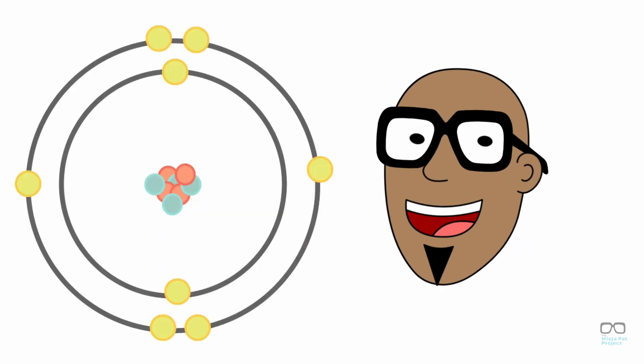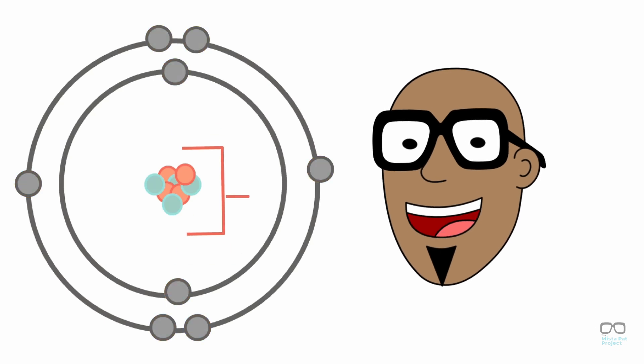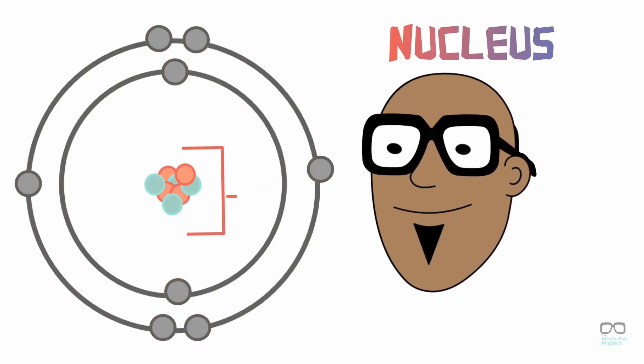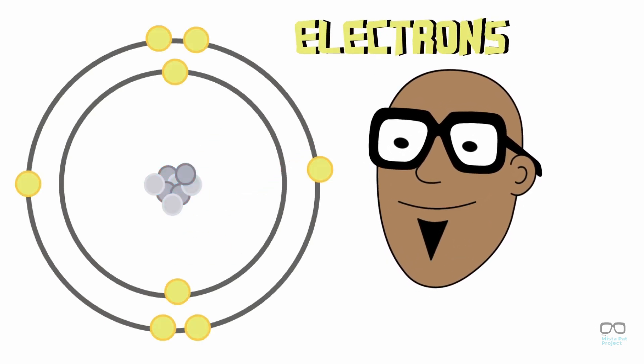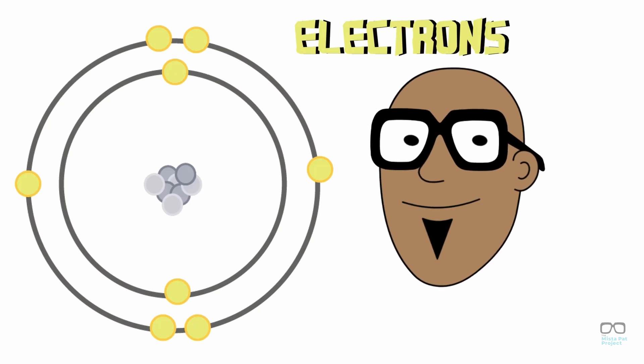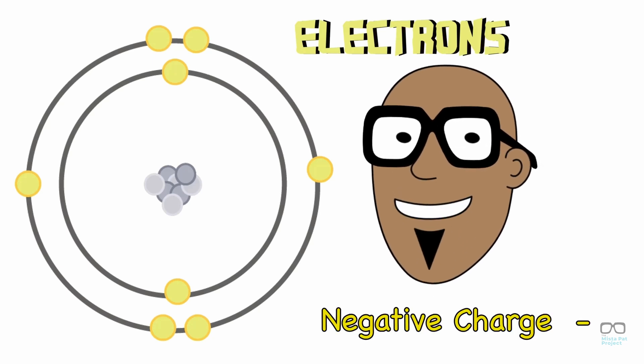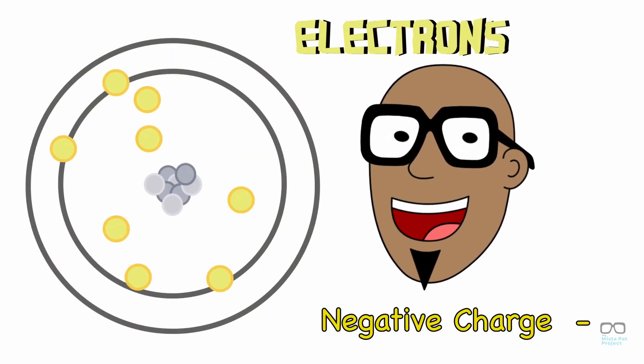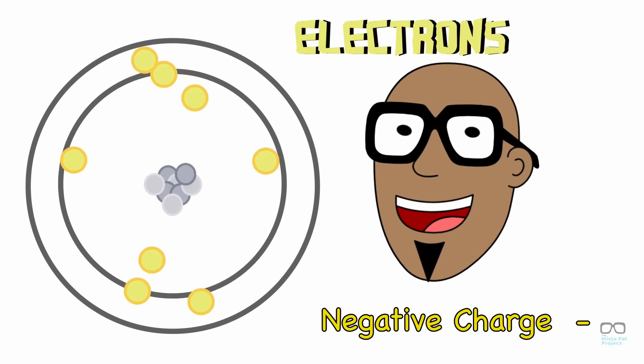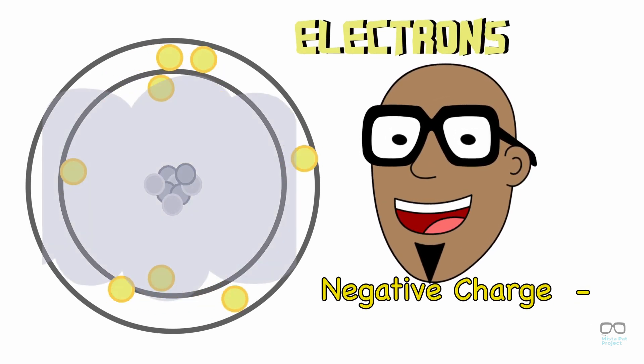Both protons and neutrons are found in the nucleus or center of an atom. Electrons, however, like to hang out in the outer layer. Electrons are negatively charged particles that orbit around the nucleus, creating a negatively charged cloud called an electron cloud.